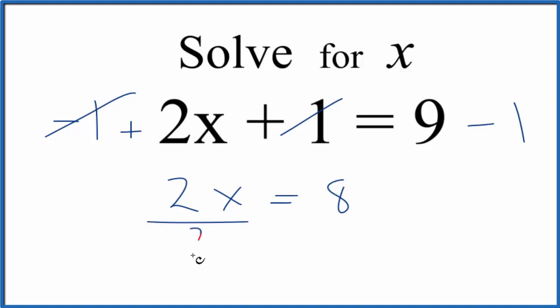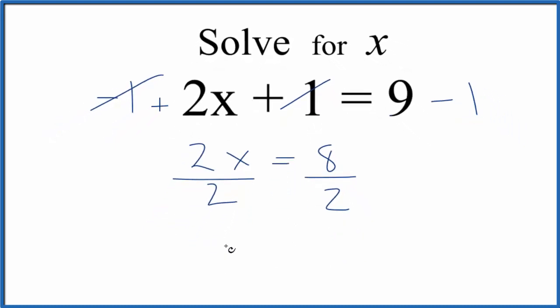Now we could divide both sides by 2. As long as we do the same thing to both sides, we're okay. 2 divided by 2 is 1, so we have 1x. We don't really write the 1, though. So we'll say x equals 8 divided by 2. That is 4. So we've solved for x here with this equation 2x plus 1 equals 9.